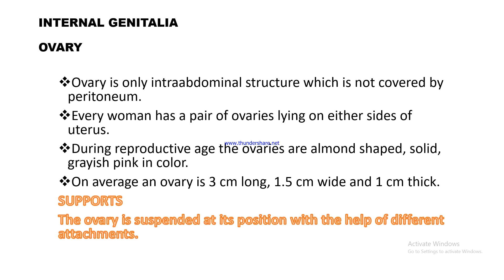Turning to internal genitalia — the ovary. The ovary is an intra-abdominal structure which is not covered by peritoneum. Every woman has a pair of ovaries lying on either side of the uterus. During reproductive age, the ovaries are almond-shaped, solid, and grayish-pink in color.